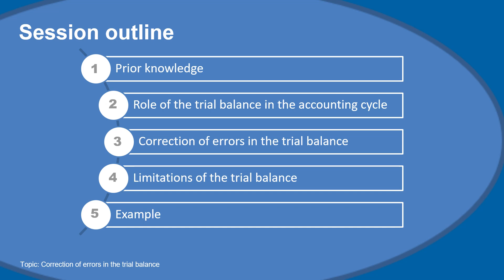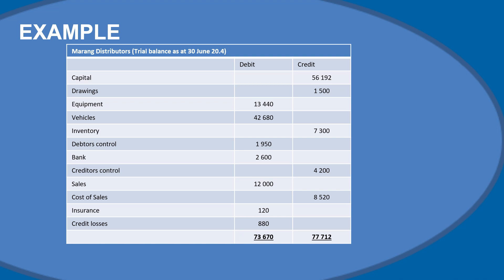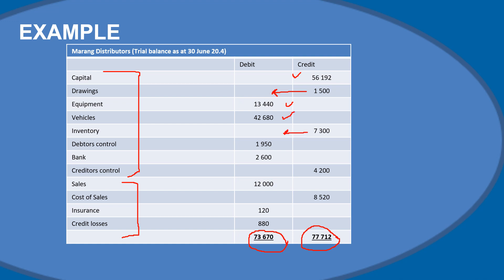Now for the example. We are given an incorrect trial balance — I can see at first glance that the debit and credit entries are not equal. We have the statement of financial position section at the top and the nominal account section towards the bottom. One thing to look for is whether debit and credit entries are on the right side. Capital normally has a credit entry, but drawings should be on the debit side because it decreases equity. Equipment and vehicles are assets on the debit side, and inventory should also be on the debit side.